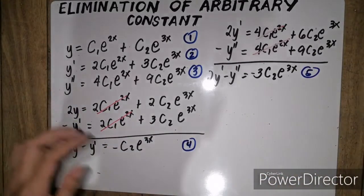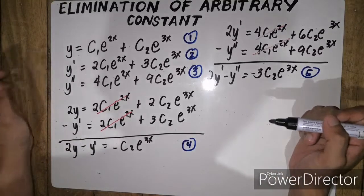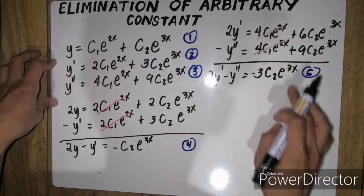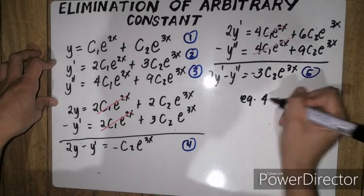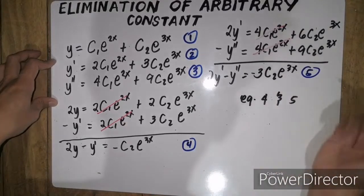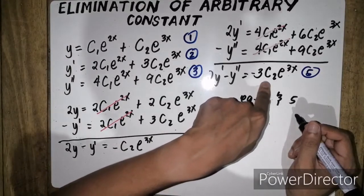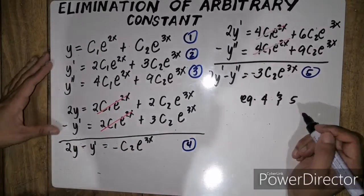Kung mapapansin ninyo, eliminated na sa equation number 4 at equation number 5, si first arbitrary constant. So, ang gagawin ko naman ay itong equation number 4 and 5. Para makancel ko naman si second arbitrary constant, kailangan i-multiply ko itong buong equation by 3.